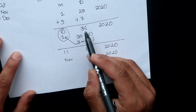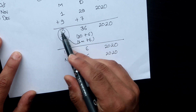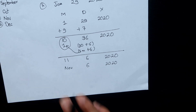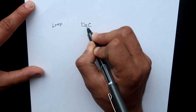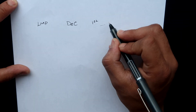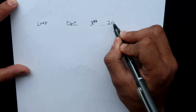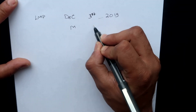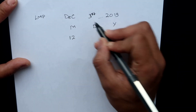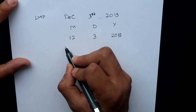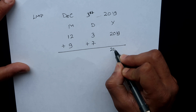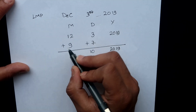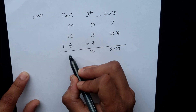You break down the excess days into 30 and the remainder. You convert 30 days into one month and add it to the month column. Now let's go for another example. Let's say your last menstrual period is December 3rd, 2019. In MDY format: Month = 12, Day = 3, Year = 2019. Applying the formula: Year stays 2019, Day = 3 + 7 = 10, and Month = 12 + 9 = 21.